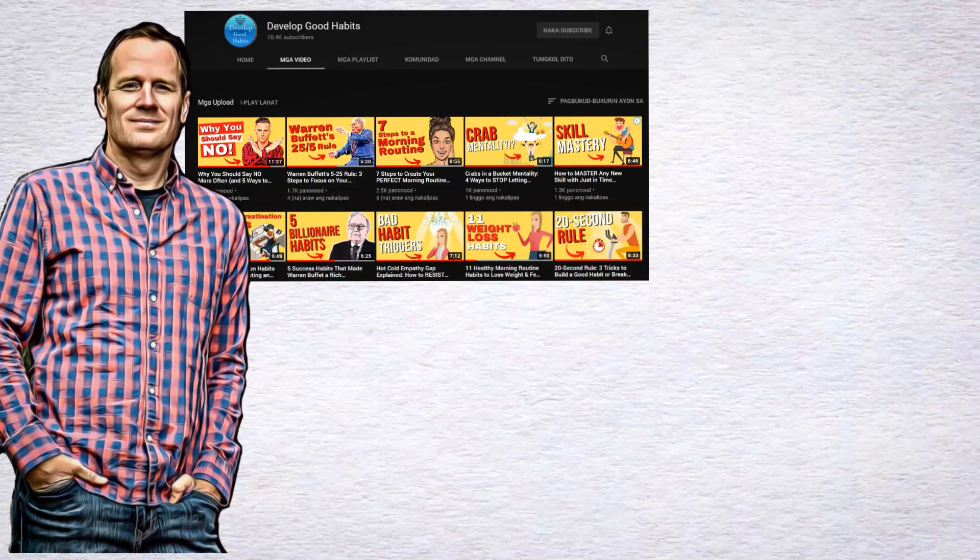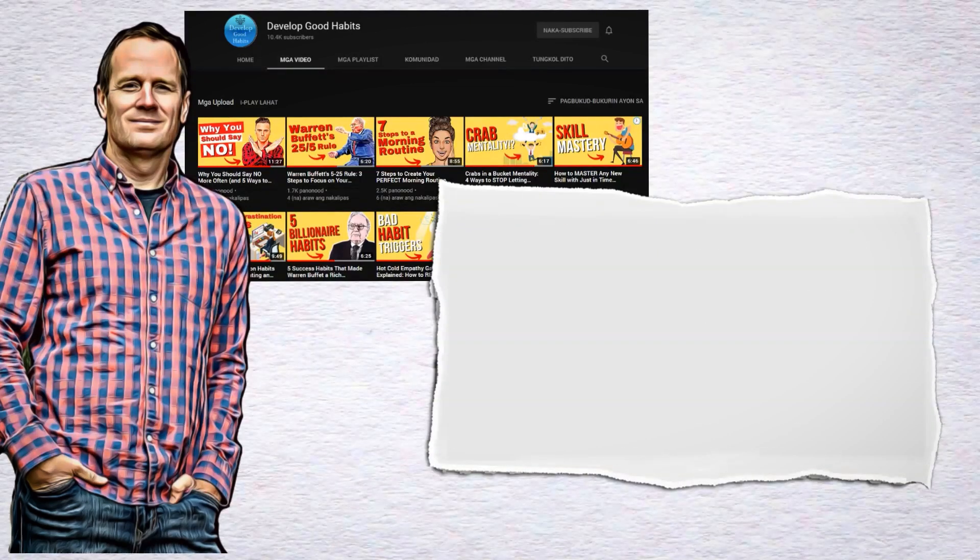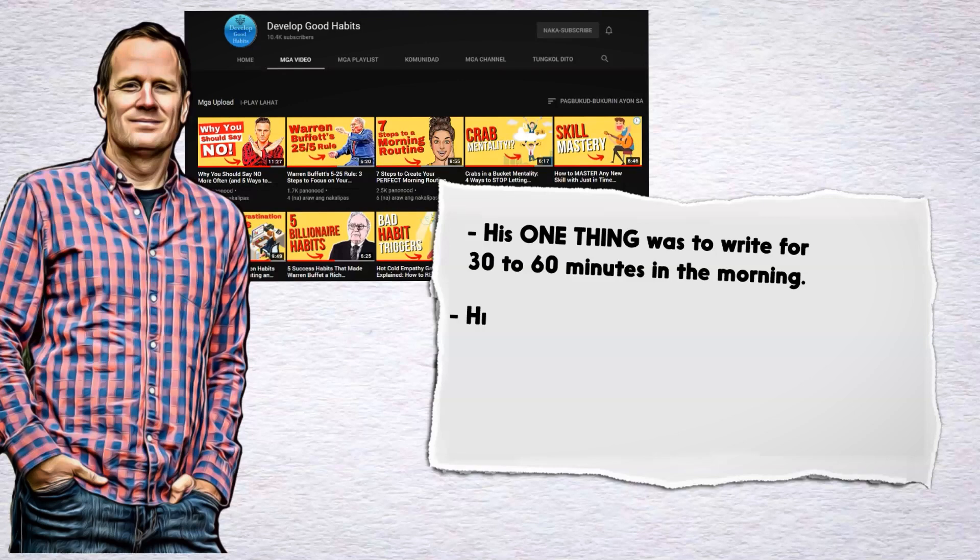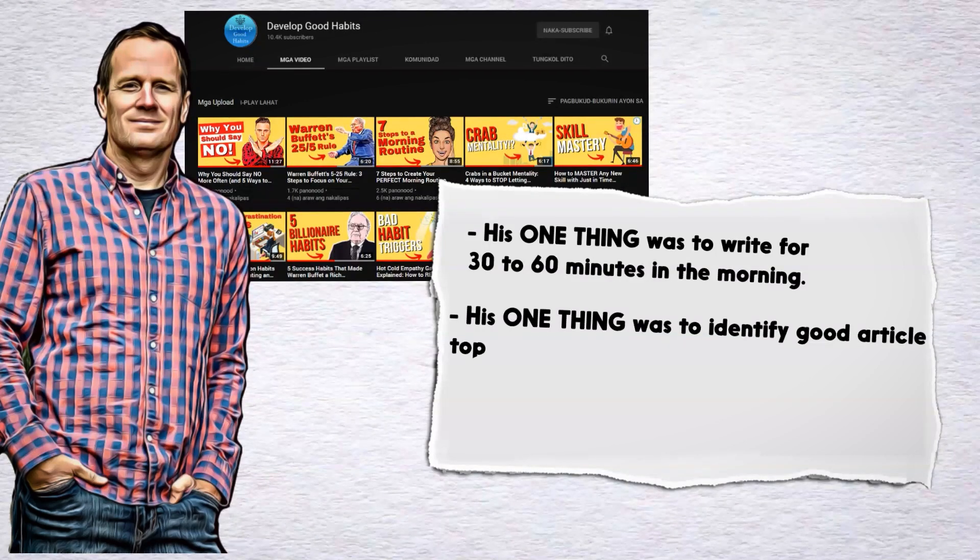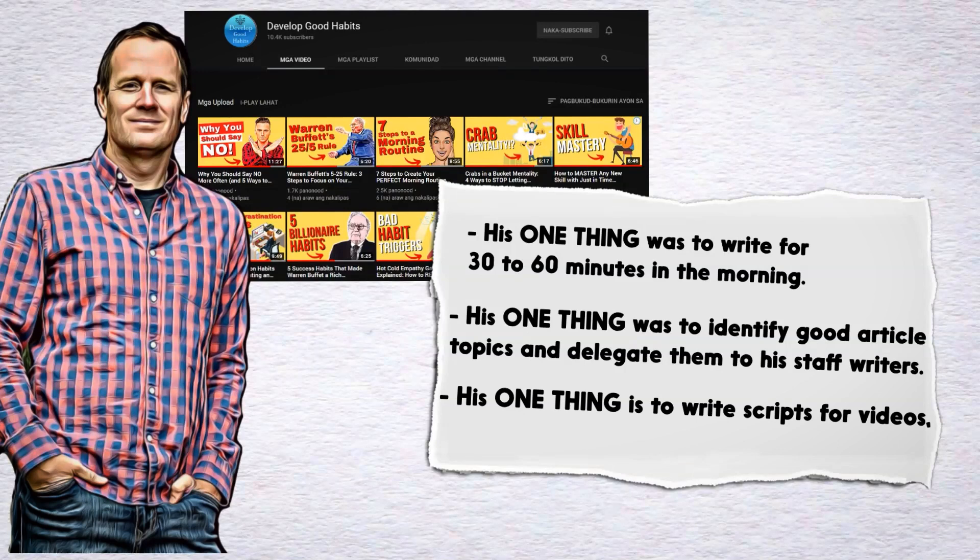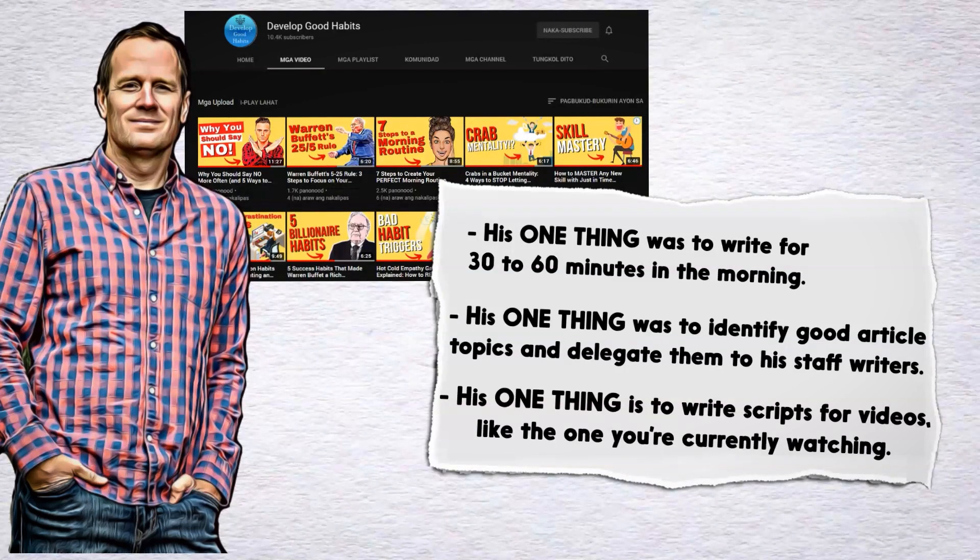His one thing constantly changes depending on his current goals. When he was building his self-publishing business, his one thing was to write for 30 to 60 minutes in the morning. When he was building his authority website business, his one thing was to identify good article topics and delegate them to his staff writers. And now that he's focusing on YouTube, his one thing is to write scripts for videos like the one you're currently watching.